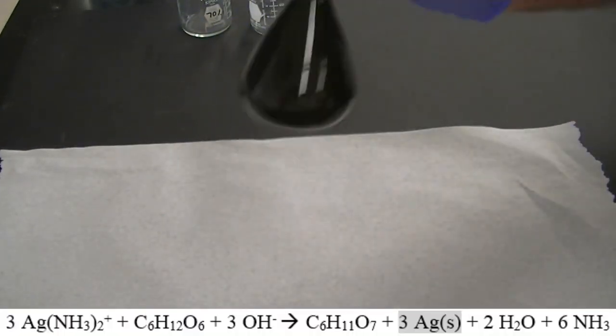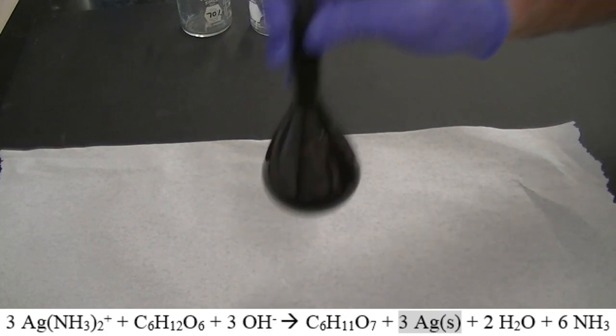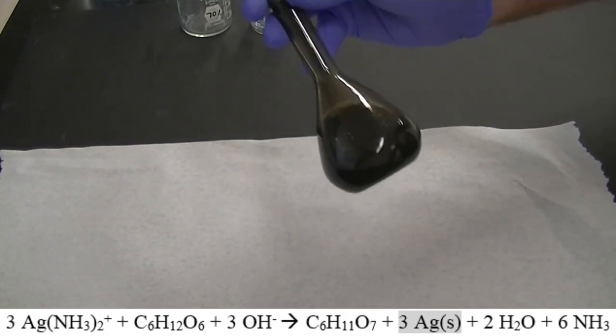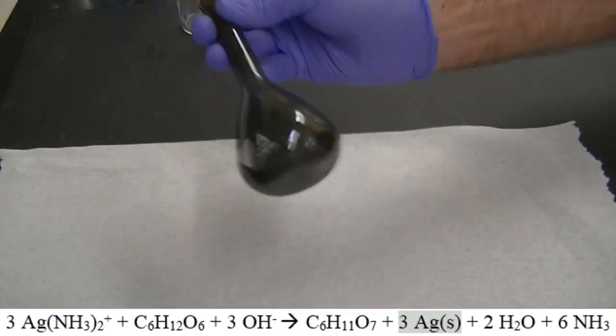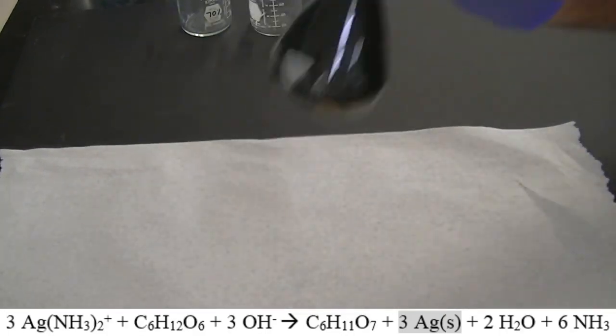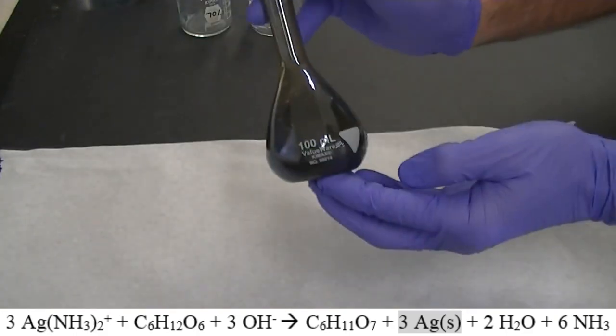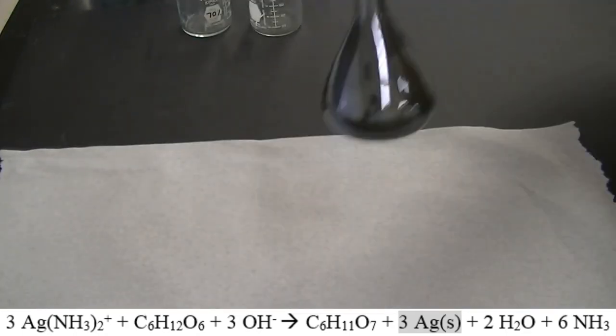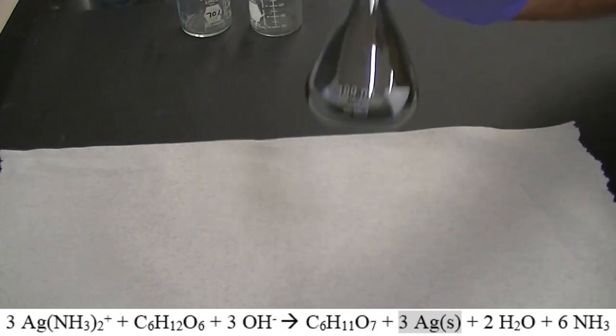The silver complex reacted with the sugars in the Powerade to form silver metal. The reaction mixture always looks dark and cloudy at first, kind of like a storm cloud. I think this is really interesting because this reaction reminds me of the saying that every cloud has a silver lining.